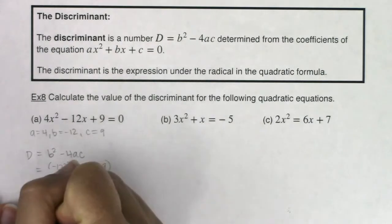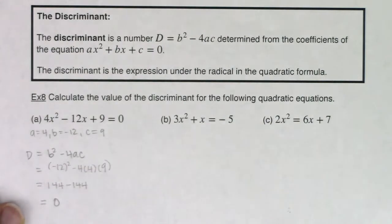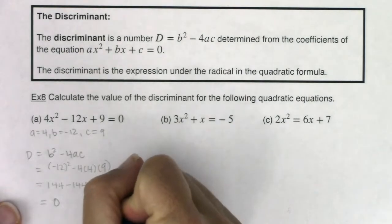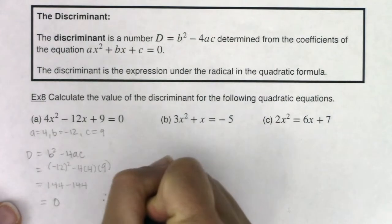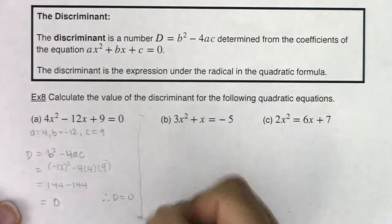So I'm going to get, for example a, that my discriminant is 0. So let's just keep that in mind. I'll put it over here, that my discriminant is 0 for part a.